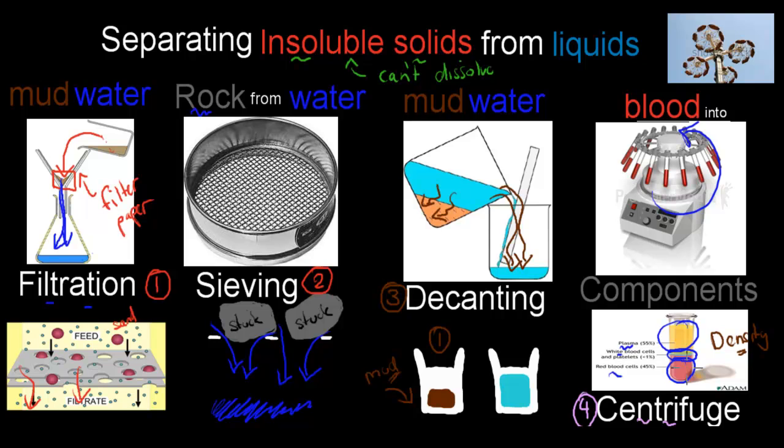So what I want you to get out of this video is realize that we can separate insoluble solids from liquids. So insoluble solids are solids that can't dissolve in, for example, water. And we can separate them through four different processes. We can use filtration, for example, if we want to have mud water, we can use filter paper to separate the mud from water.